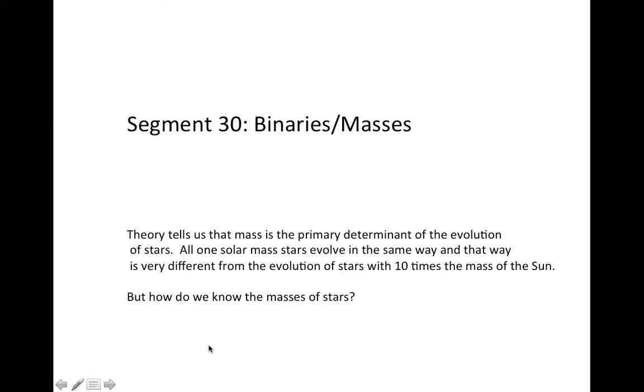Segment 30: Binaries and Masses. Theory tells us that mass is the primary determinant of the evolution of stars. All one solar mass stars evolve in the same way, and that way is very different from the evolution of stars with ten times the mass of the sun or a tenth the mass of the sun.